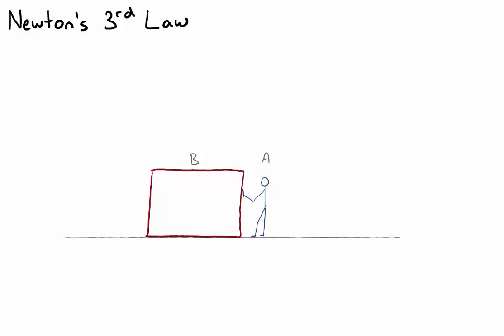So if an object, which we'll call A, so the person in this case, exerts a force on object B, which is the large box, then object B exerts the same kind of force on object A with the same magnitude, but in the opposite direction.